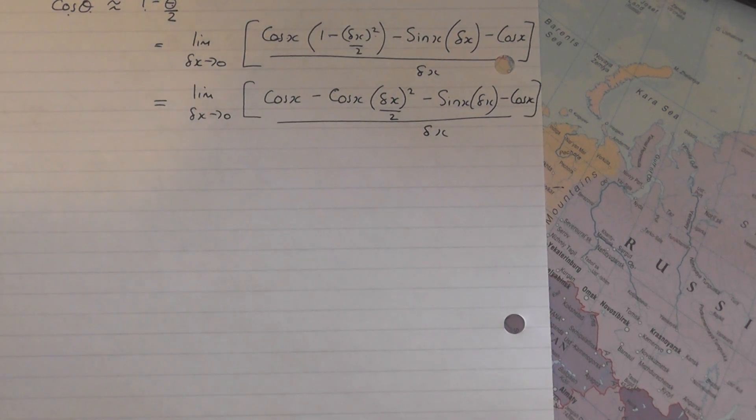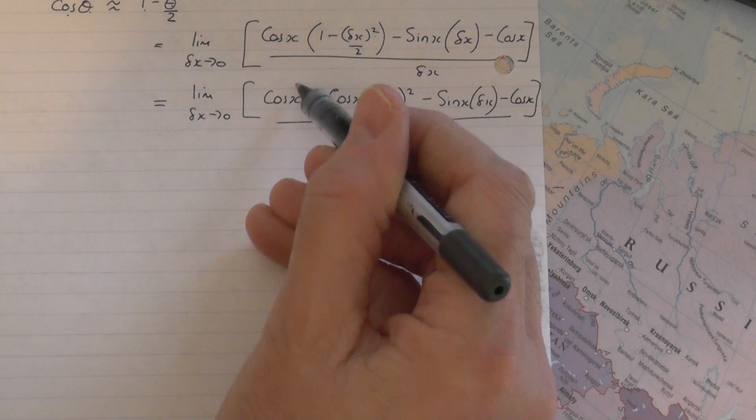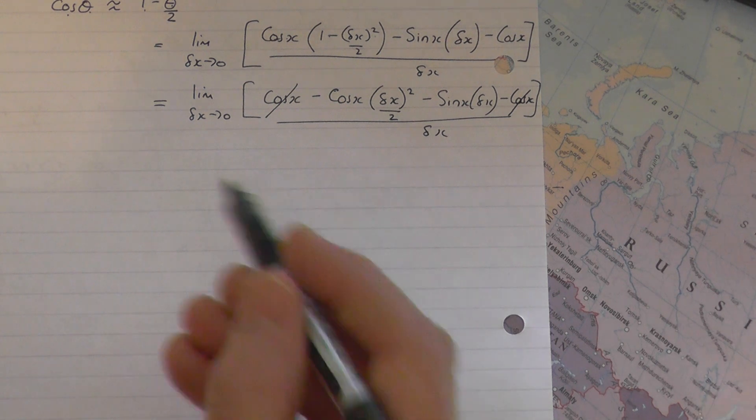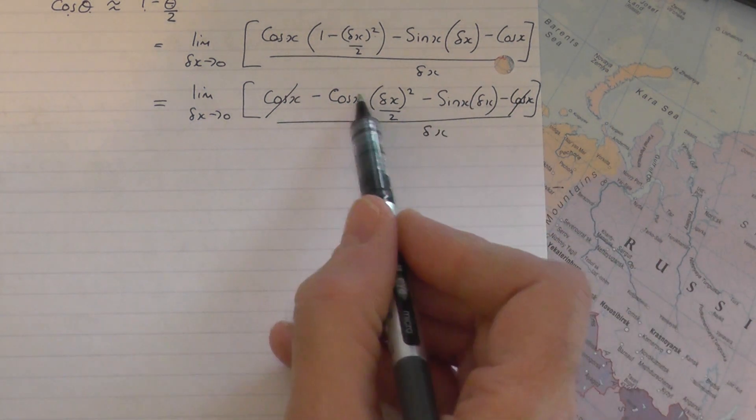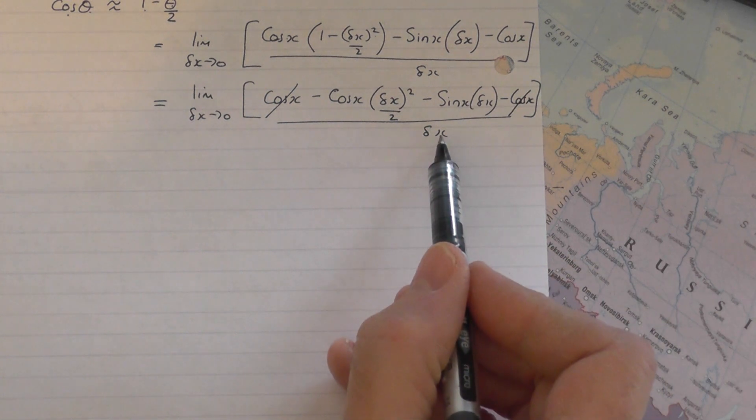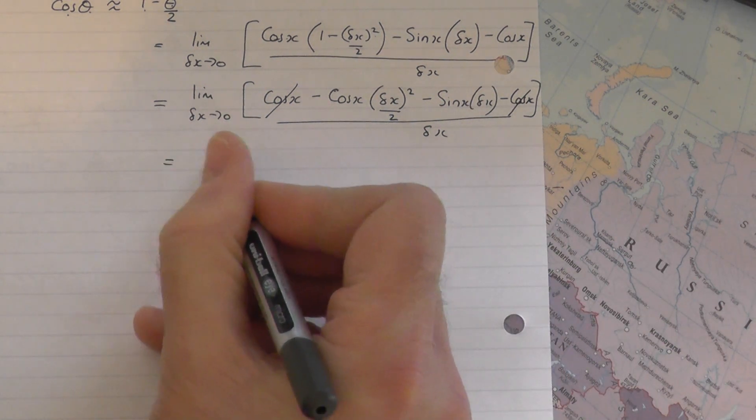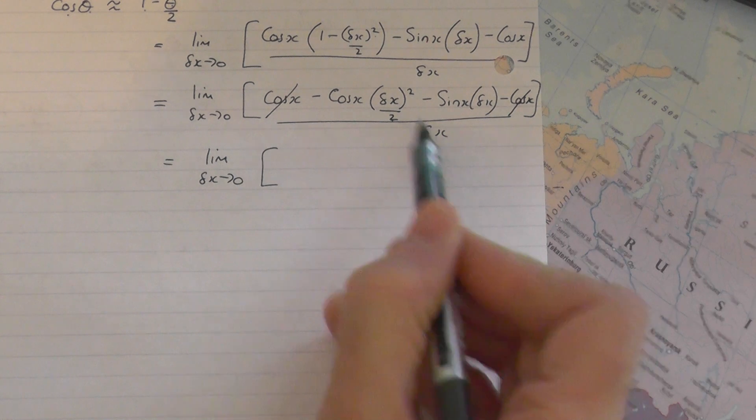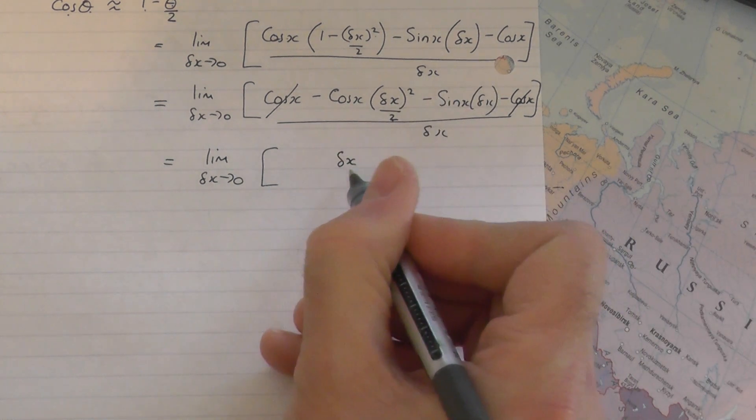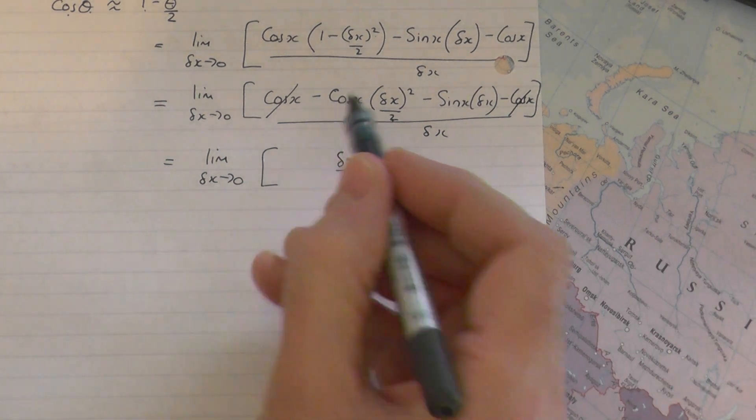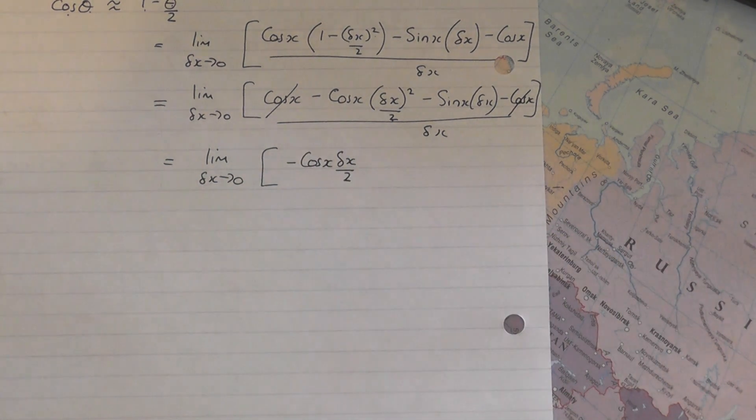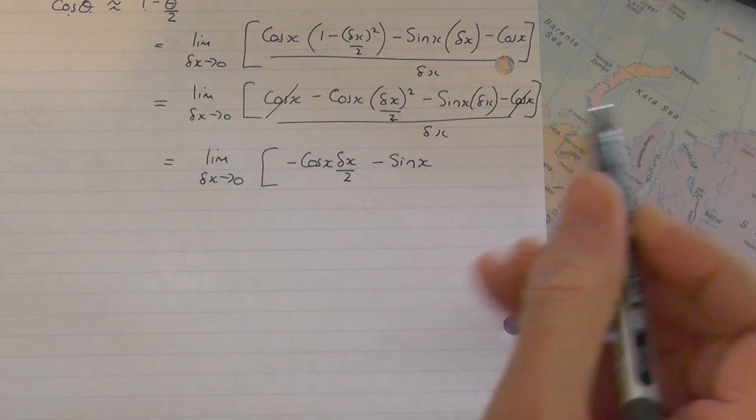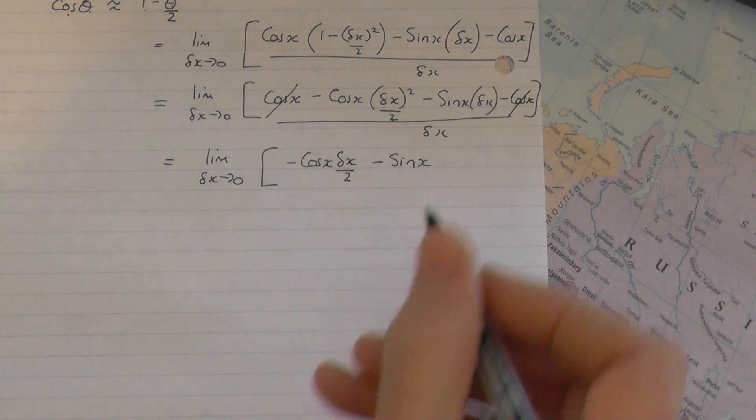Similar sort of thing happens this time as happened in the previous video for sine x. Cos x at the beginning, minus cos x on the end, on the top line, disappear with each other. I'm then also going to say these two terms on the top line now get divided by delta x, so we end up with lim delta x tends to 0 of, this delta x squared over 2 divided by delta x is just going to give you delta x over 2. You've still got the minus cos x at the front. Then you've got minus sine x, and the delta x and the delta x would cancel.